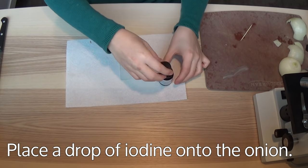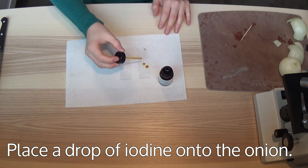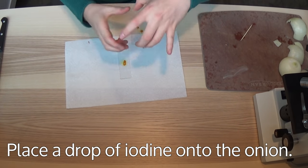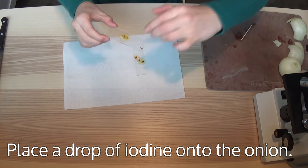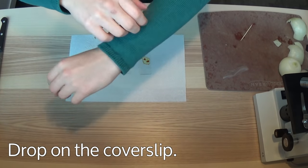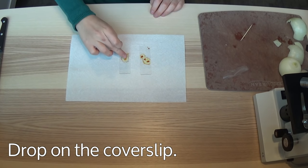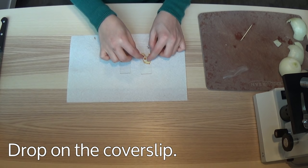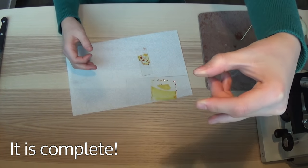Add a drop of iodine onto the onion. Drop on the cover slip. Apply pressure to the cover slip, but not enough to break it. Now your slide is complete.